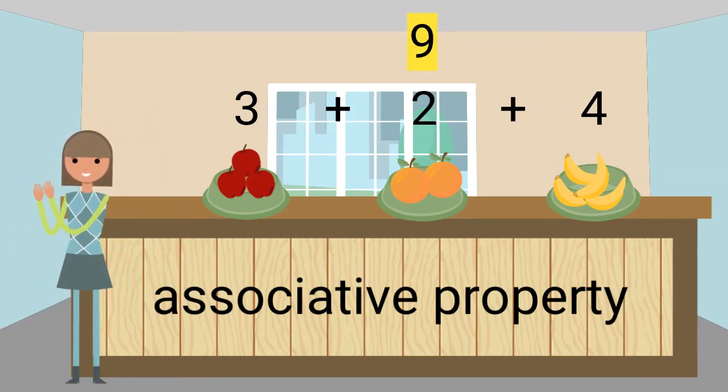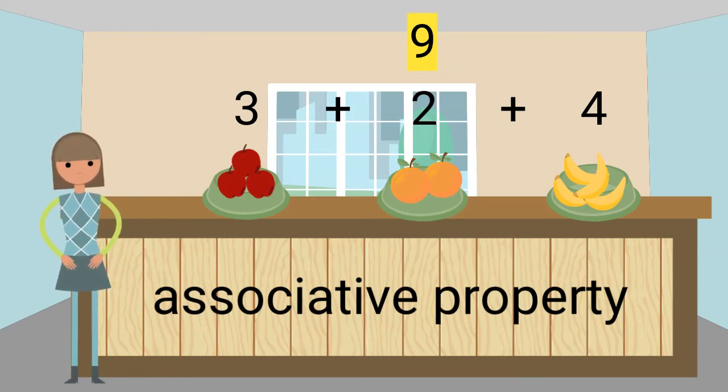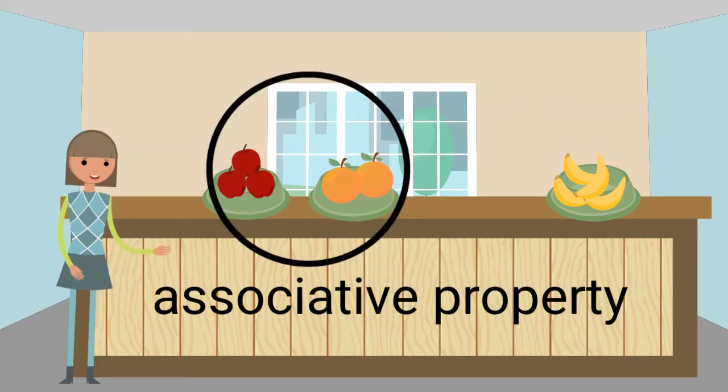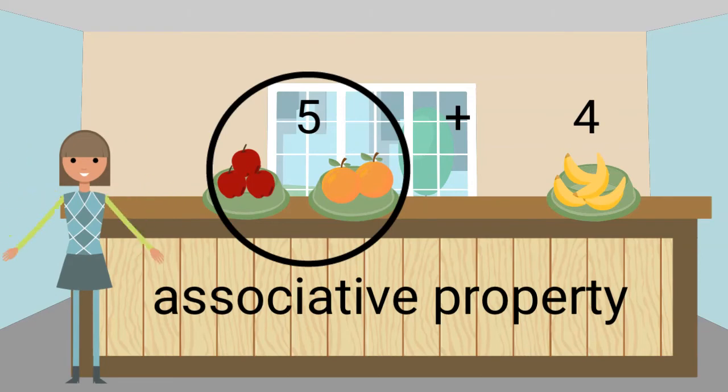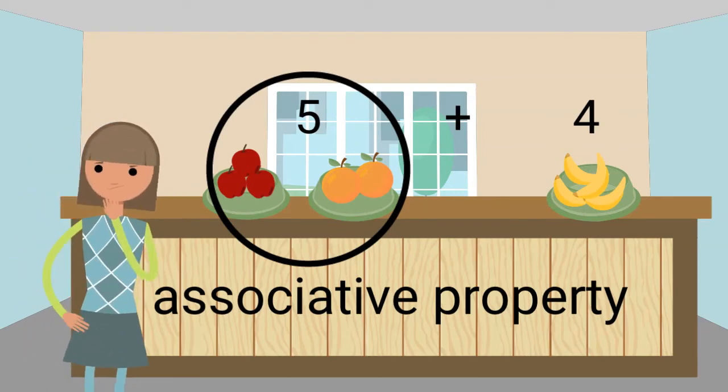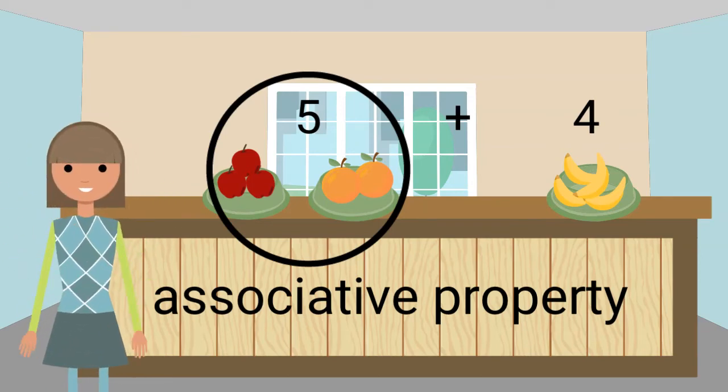We can also find the sum using the associative property. We can regroup the numbers in different ways. We can group the apples and oranges, which make a group of 5 and add them to the 4 bananas. What does 5 plus 4 equal? You got it!